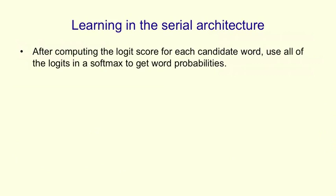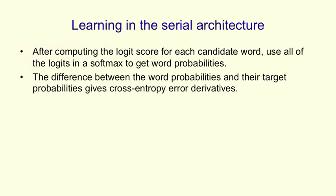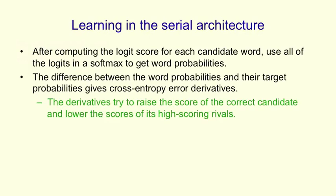Learning in the serial architecture works in the following way. We first compute the score for each possible candidate word, and then we put all those scores, which we computed sequentially, into a big softmax to get word probabilities. The difference between the word probabilities and their target probabilities, which is normally one for the correct word and zero for everything else, gives us the cross-entropy error derivatives. We use those derivatives to change the weights in such a way that we raise the score for the correct candidate and we lower the scores for all of its high-scoring rivals.